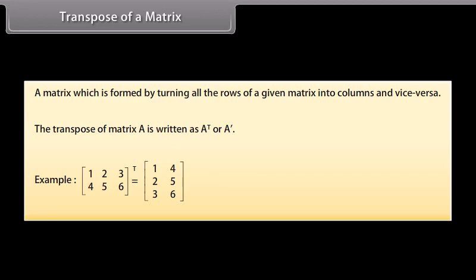...is a matrix with first row 1, 4; second row 2, 5; and third row 3, 6. So the rows become columns and vice versa.